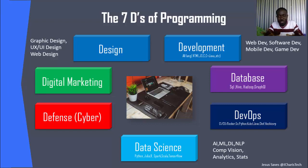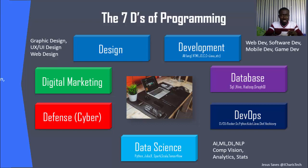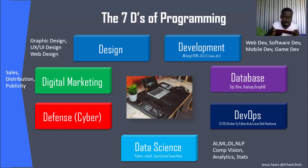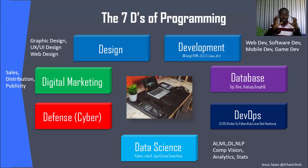The seventh D is Digital Marketing, which many people concentrate less on. You may know how to design, develop, and build databases, but how are you going to earn money? You have to know how to market and sell your product — that's where sales, distribution, and publicity come in. Even if you only choose design or databases, you must add digital marketing to derive real benefit.